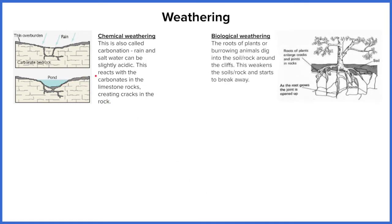We also have biological weathering. This can be animals burrowing into the soil or rock and weakening the structure, or as shown in this diagram, plants and trees whose roots grow into the imperfections — the joints and bedding planes of the rock. As the plants grow, their roots become bigger and start to split the rock, making it progressively weaker.